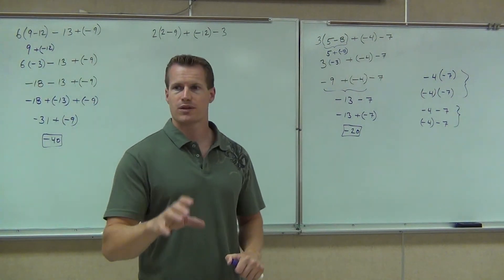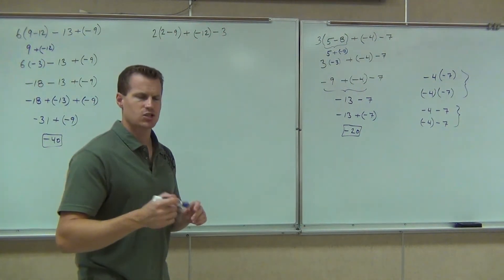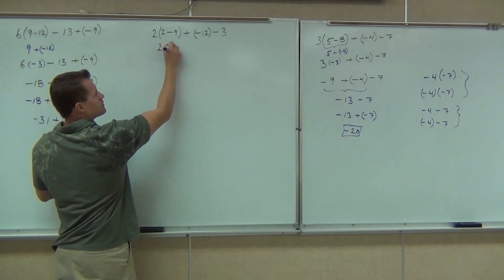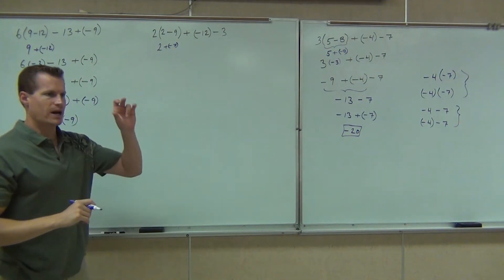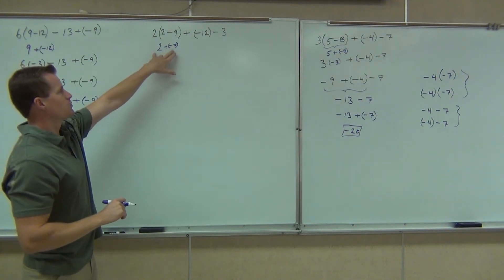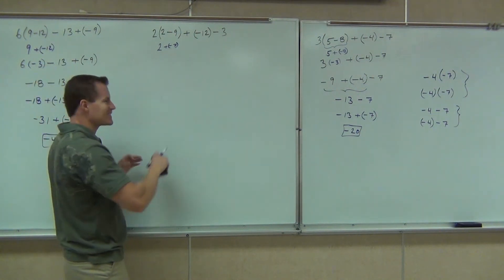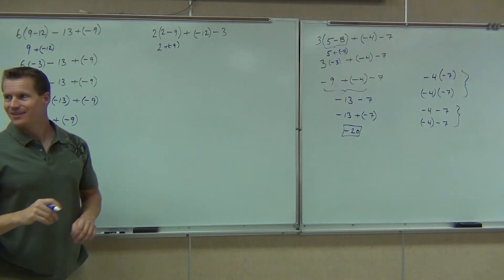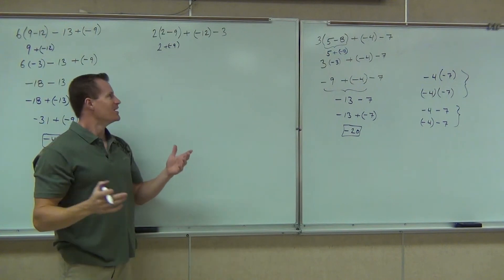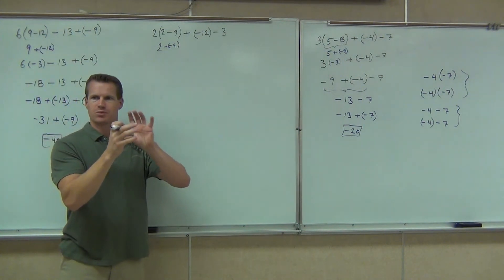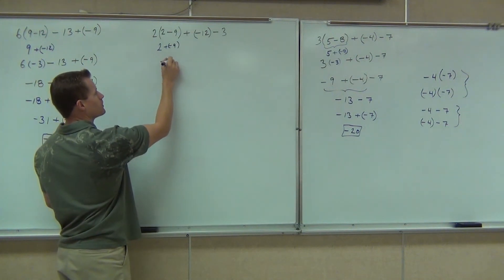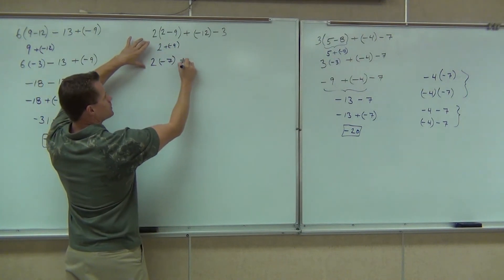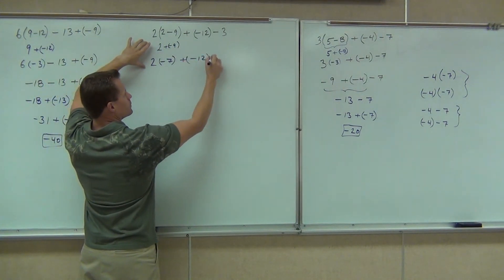Next one — very similar type of problem. We're going to work on the parentheses first. We have the 2 minus 9. How much is 2 minus 9? Good. Change that to plus negative — we know minus changes to plus negative. We have 2 plus negative 9. We switch that minus to a plus negative. That becomes, of course, negative 7. We build parentheses around that saying that's a negative number, then fill in the rest. We've got negative 14, negative 12, minus 3.